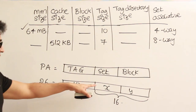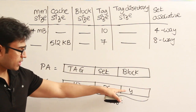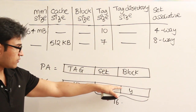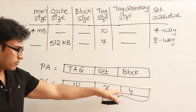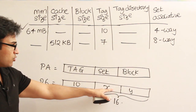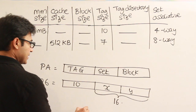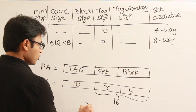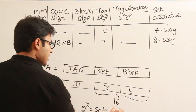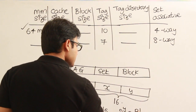X is the number of bits used to represent the set number, and Y is the number of bits used to represent the block offset. This means 2^X equals the number of sets and 2^Y equals the block size.